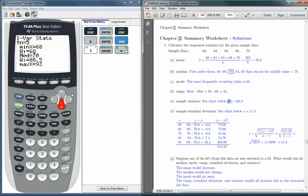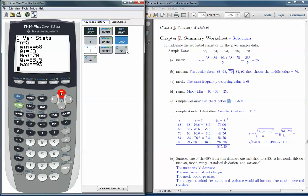So if we wanted the variance in this particular problem, we would have to go back up to our sample standard deviation. And we would have to square that, and it would get us the variance.